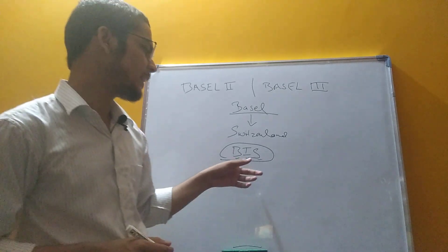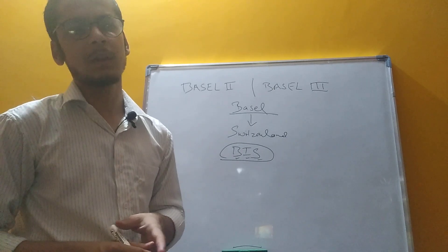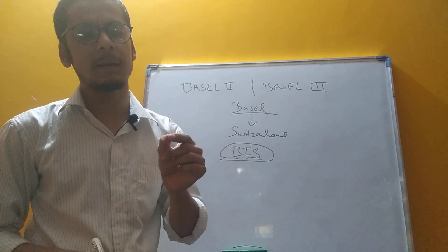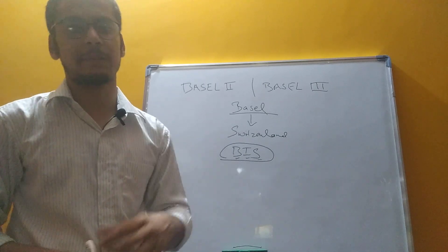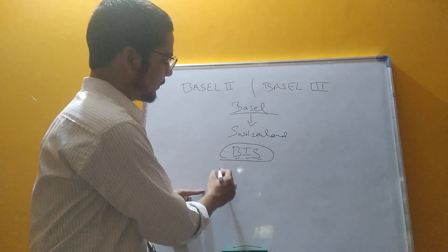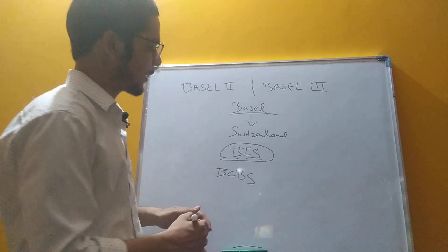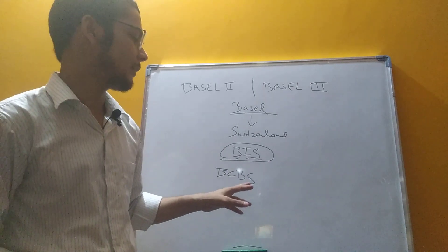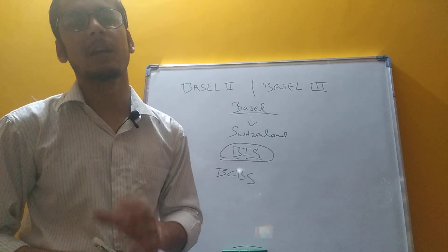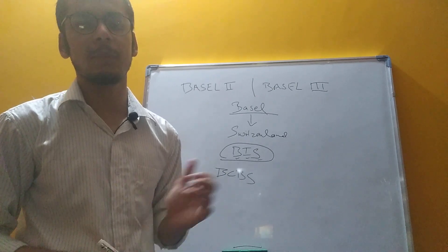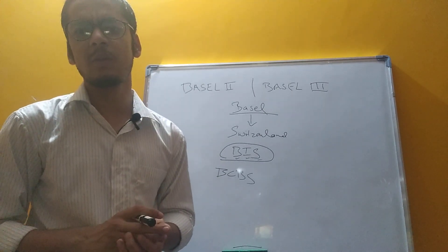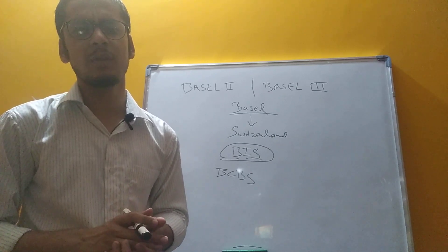BIS — Bank for International Settlement — is a bank where the central banks of member countries like UK are members. The UK Central Bank is a member of BIS.